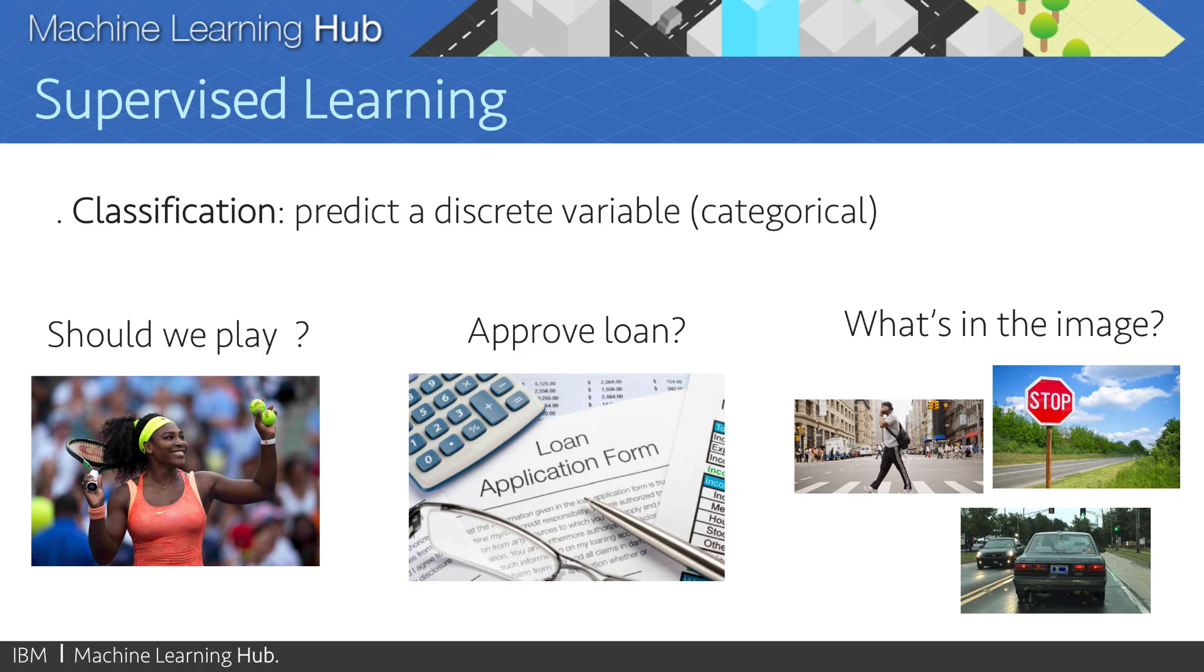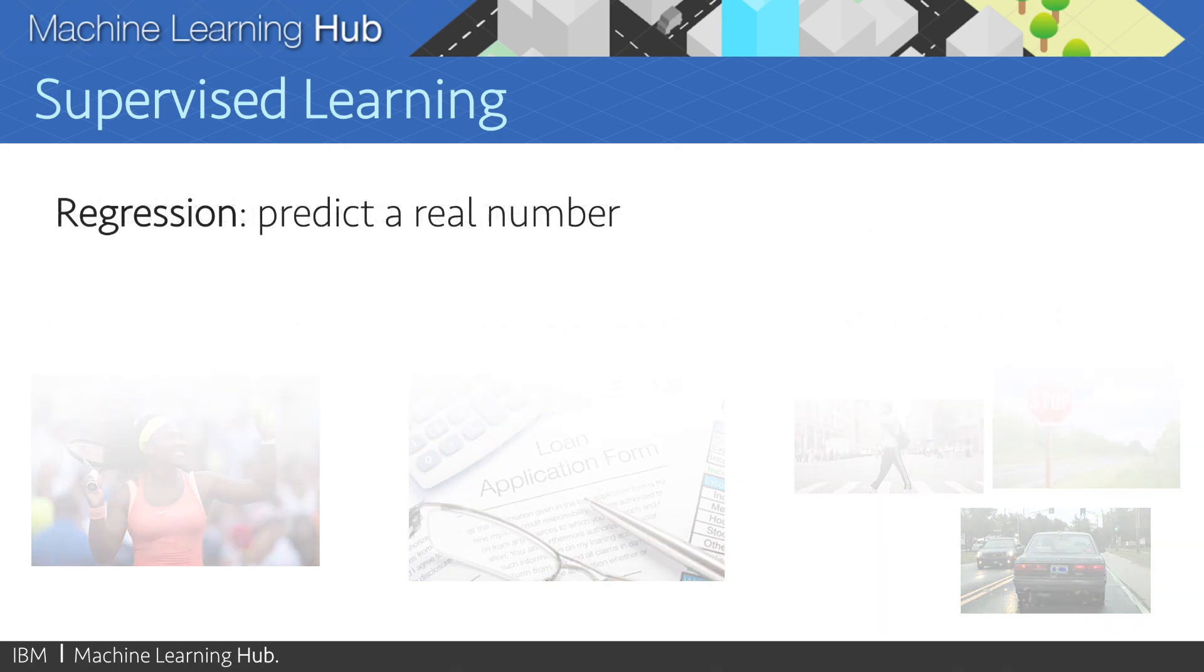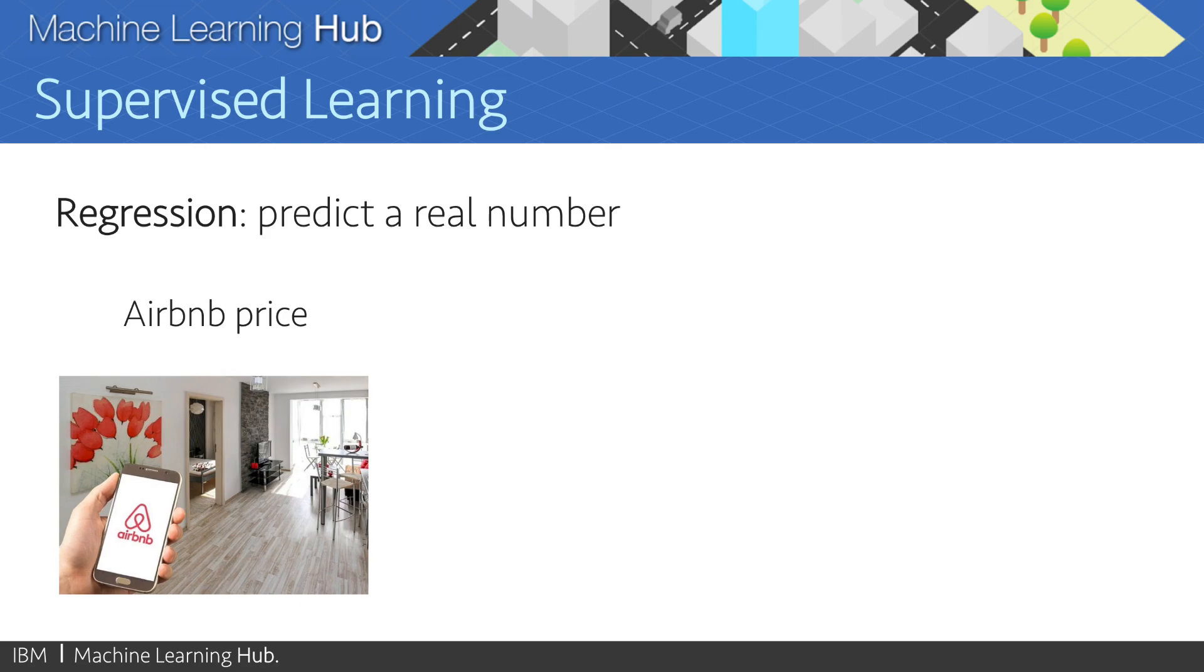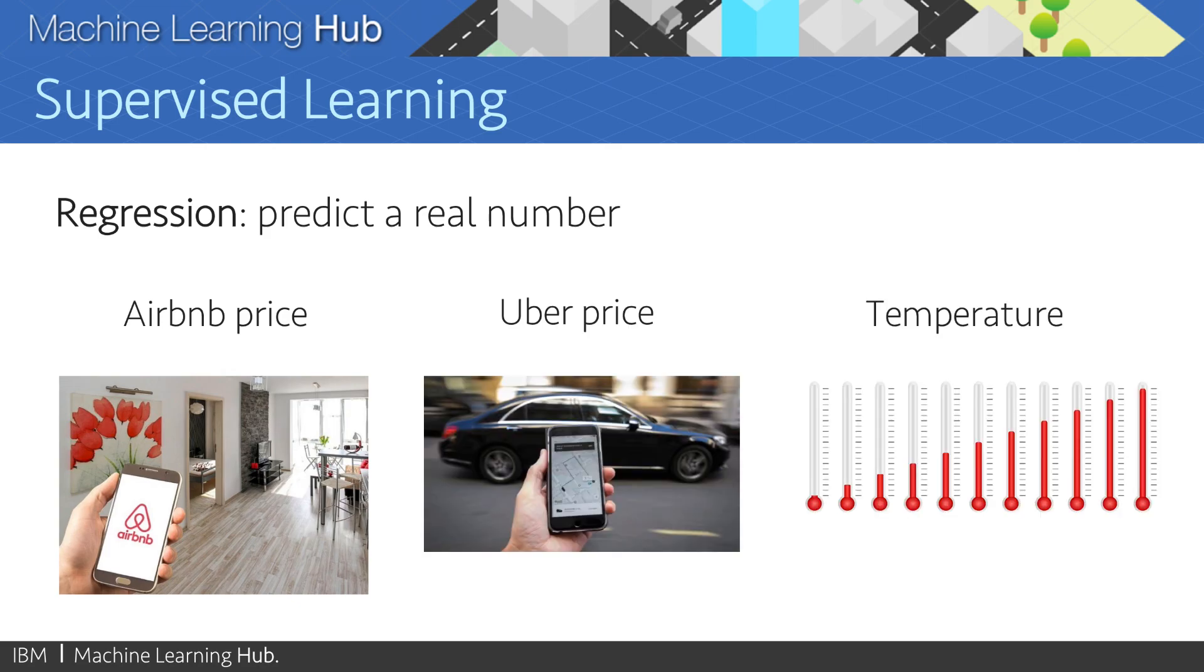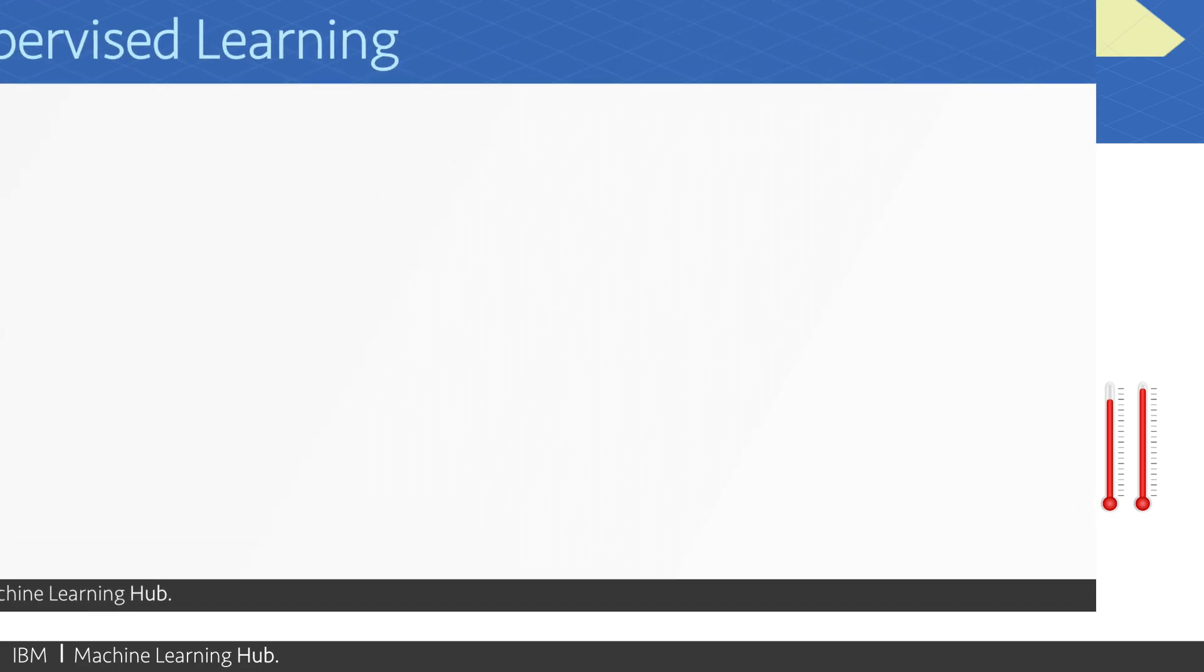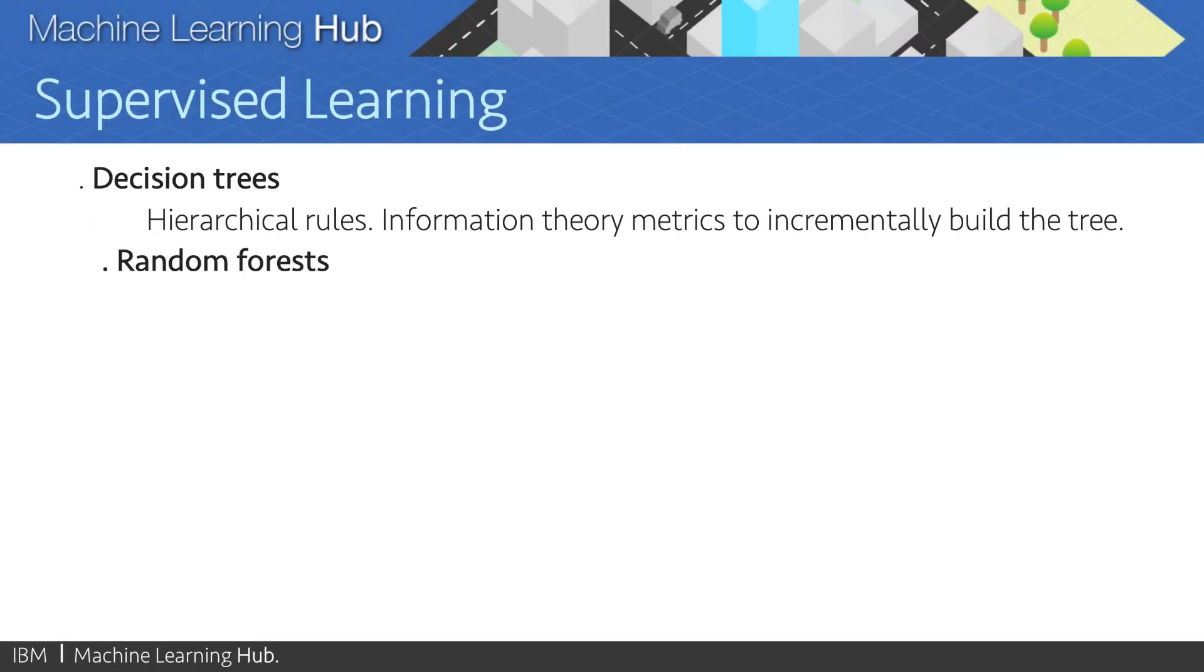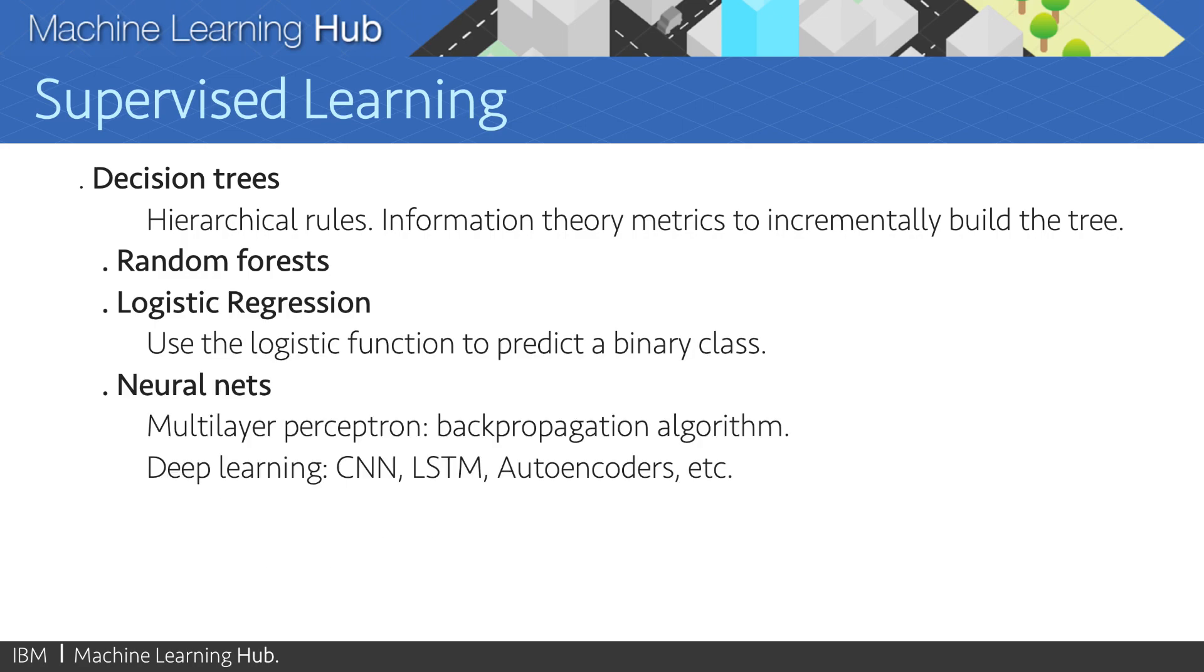Now, if you would like to predict a real number, such as the price of an Airbnb, or the price of an Uber, or the temperature, then you have a regression problem. Some of the common supervised learning algorithms are decision trees, random forests, logistic regression, linear regression, generalized linear models, neural networks, and support vector machines.